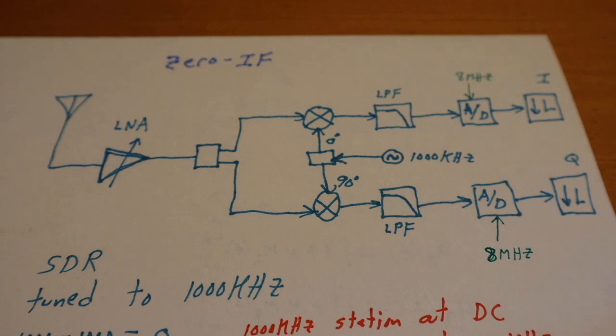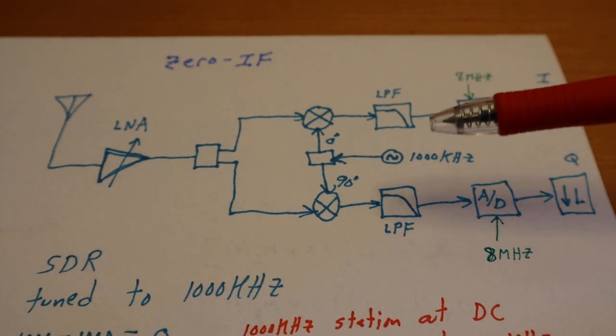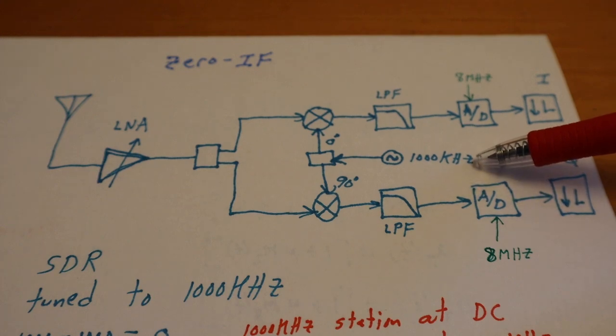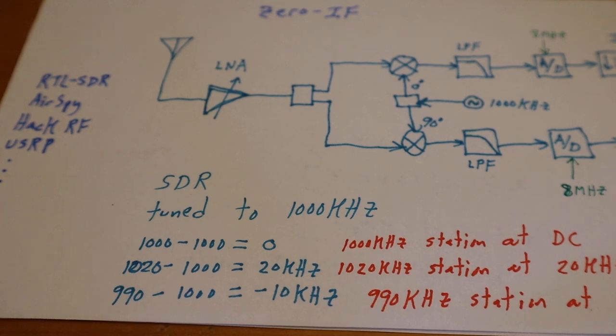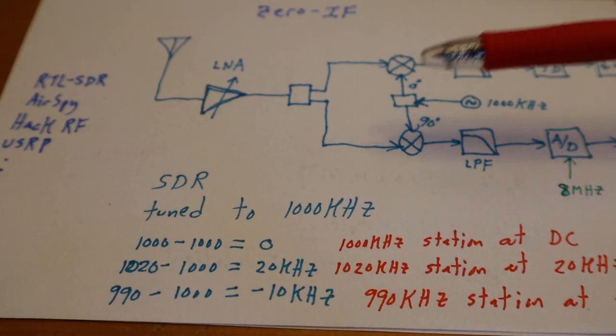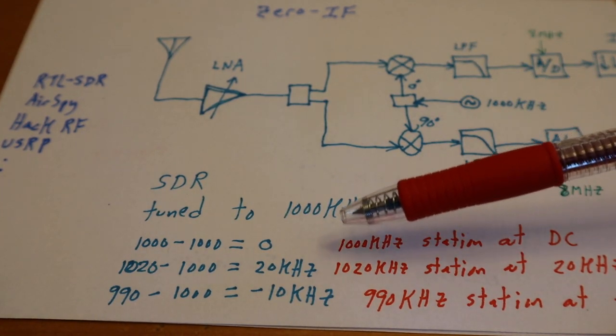I'm not going to get into the details of this—this is all very googleable and you can study it for yourselves. But the example here is we're again tuning our SDR radio to 1000 kilohertz, and I want to show how those three AM radio stations, in terms of the SDR, are showing up at DC, 20 kilohertz, and minus 10 kilohertz.